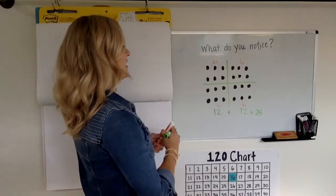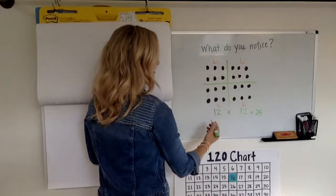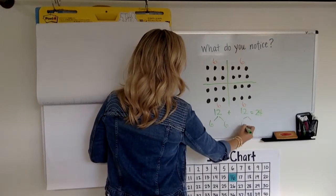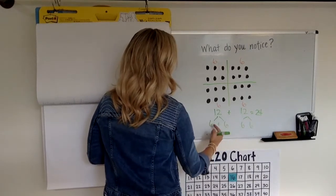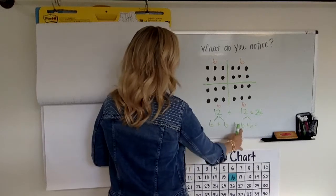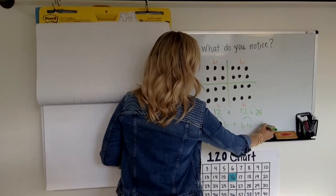So then maybe you're like, oh, I had 12, but I split it into a six and a six, and another six and a six. So six plus six plus six plus six, six plus six plus six plus six, makes 24.